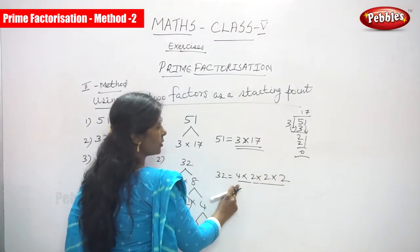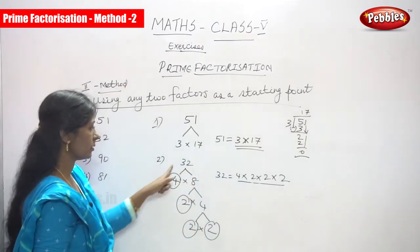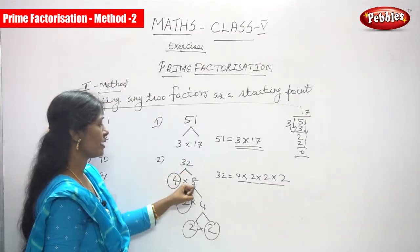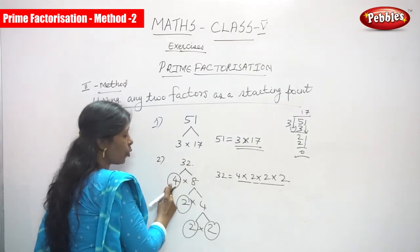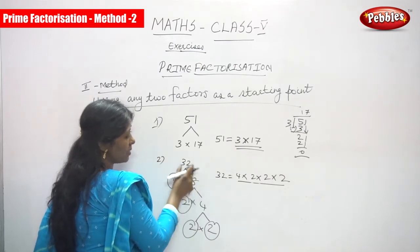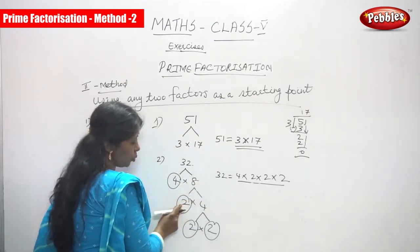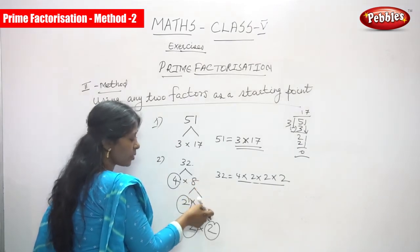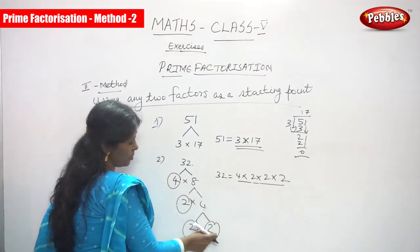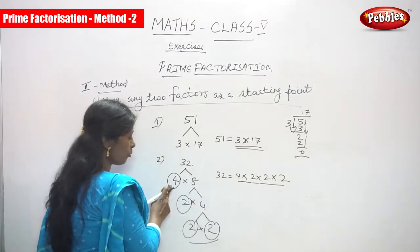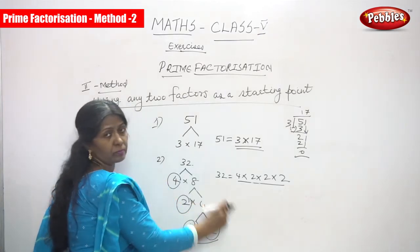To recap: 32 divided by 4 gives 8, and 4 into 8 equals 32. Then 8 divided by 2 gives 4, and 4 splits into 2 into 2. So the factors of 32 are 4 into 2 into 2 into 2.